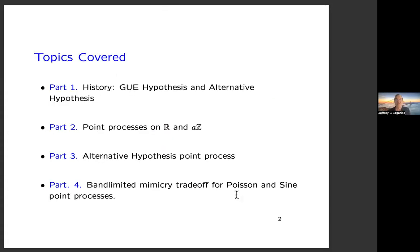The topics I would like to cover are: history of the GUE hypothesis and the alternative hypothesis, then point process models, then the point process that behaves like the alternative hypothesis and can't be discriminated from the GUE hypothesis on the known data, and finally a trade-off on band-limited functions, which I will describe briefly at the end of the talk.